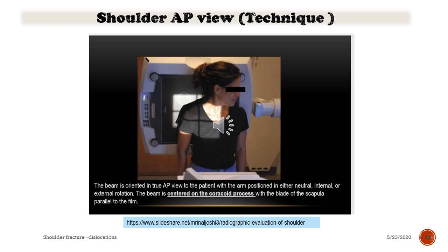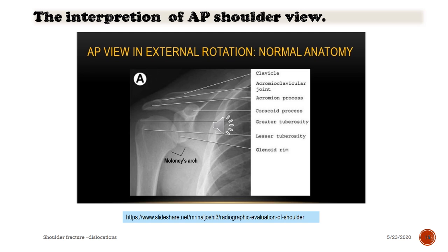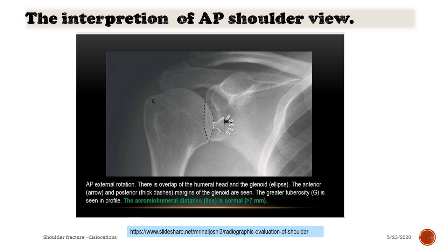There are details about radiographic techniques. The shoulder AP view technique shows the overlap sign and the Moloney arc — the shunted lines of the shoulder. Notice the Moloney arc and the overlap sign. You can easily detect the overlap sign on a normal AP shoulder view radiograph.